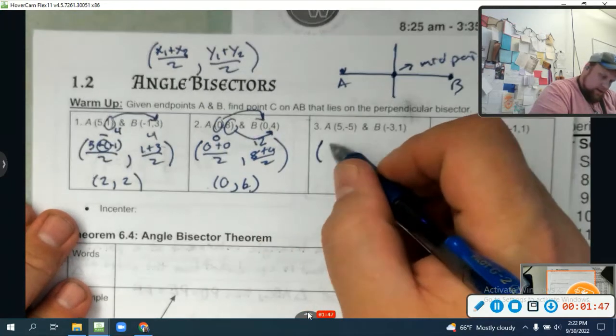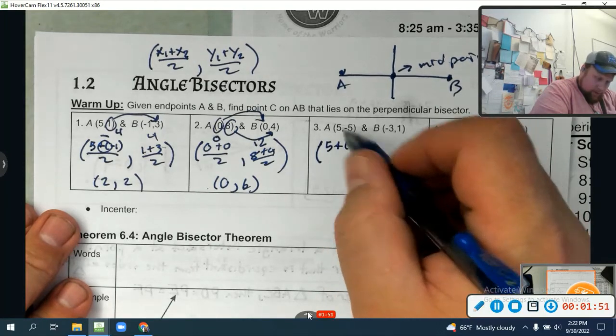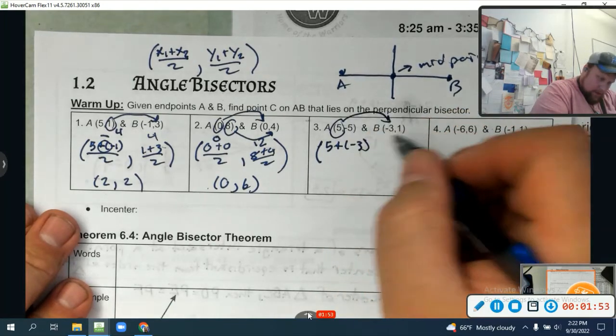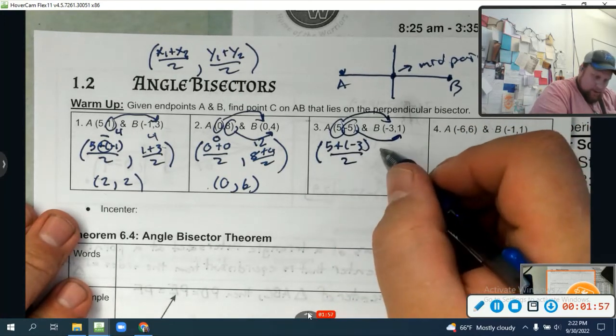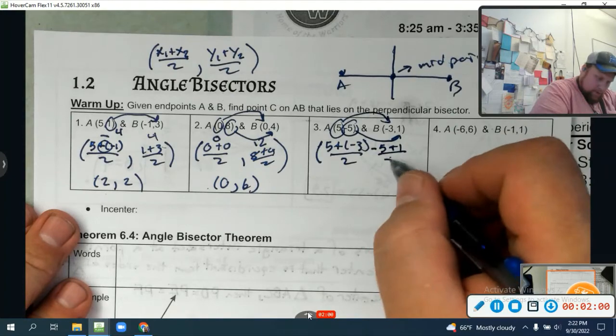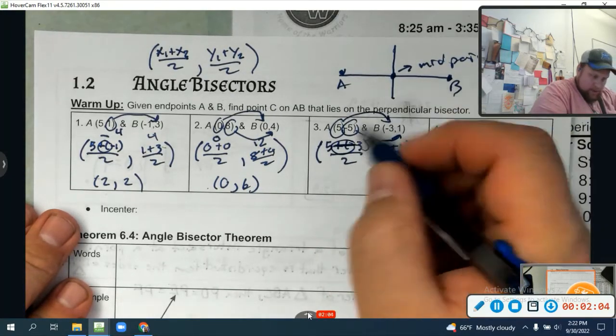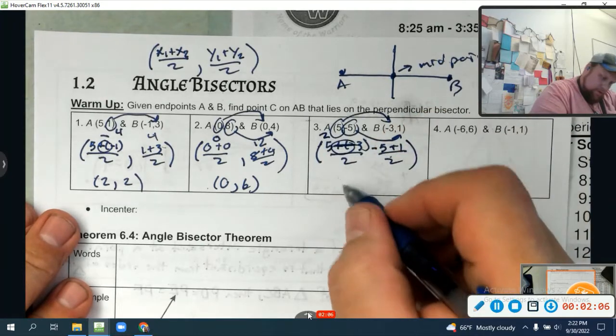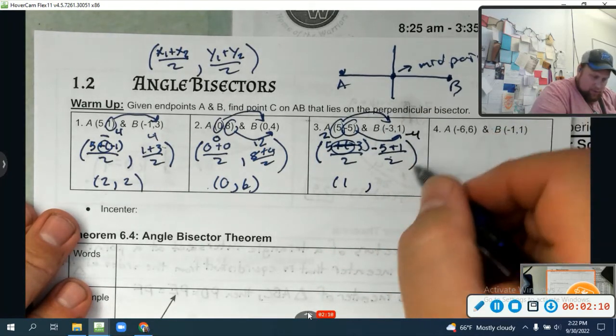All right, 5 plus negative 3 right, because I get the x's, and then negative 5 plus 1, that's over 2. Negative 5 plus 1 over 2. Okay, that's going to be minus. 5 minus 3 is 2 over 2, 2 over 2 is 1.